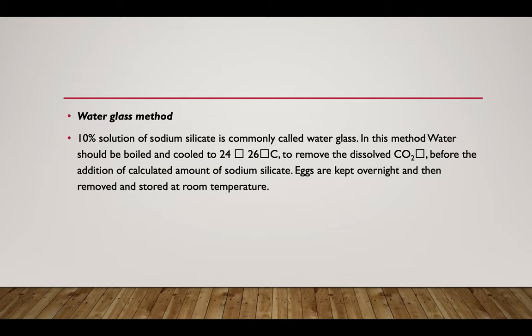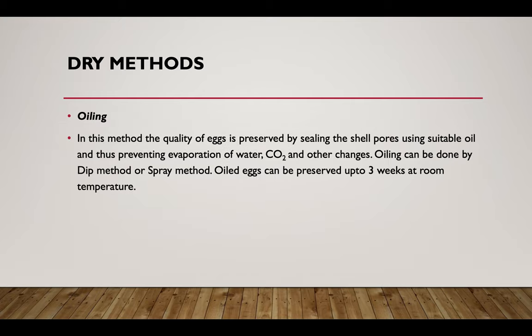In the water glass method, a 10 percent solution of sodium silicate, commonly called water glass, is used. Water should be boiled and cooled to 24 to 26 degrees centigrade to remove dissolved carbon dioxide before adding the calculated amount of sodium silicate. Eggs are kept overnight then removed and stored at room temperature. In the oiling dry method, egg quality is preserved by sealing the shell pores using suitable oils, preventing evaporation of water, carbon dioxide, and other changes. Oiling can be done by dipping or spraying; oiled eggs can be preserved up to three weeks at room temperature.